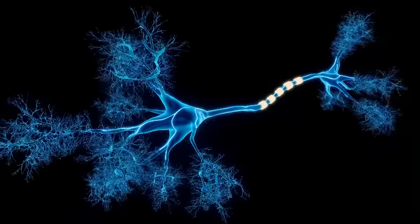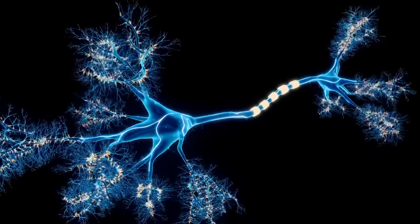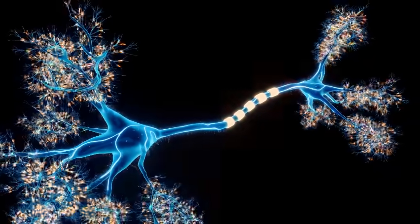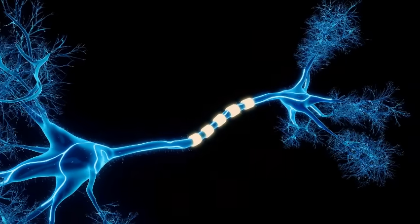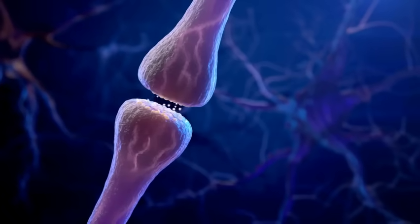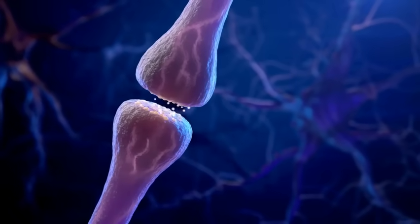At the end of the axon are the axon terminals, also known as terminal buttons. These release chemicals called neurotransmitters that carry the message across a tiny gap called a synapse to the next neuron's dendrites.